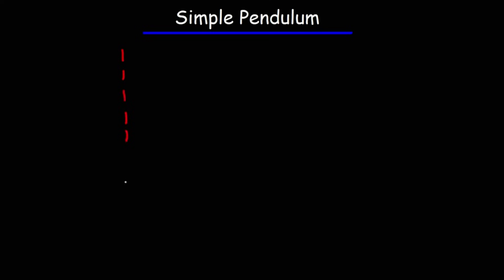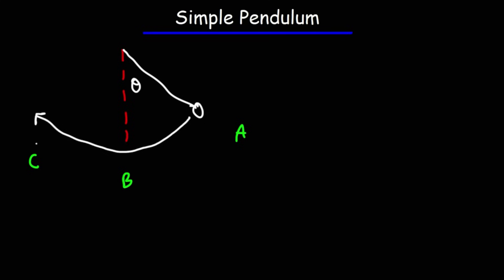In this video we're going to talk about the simple pendulum. Let's begin by drawing a vertical line and a pendulum at an angle. We'll call the three positions point A, B, and point C. As the pendulum moves from point A to point B and then to point C, and then returns from C to A, that is one complete swing.